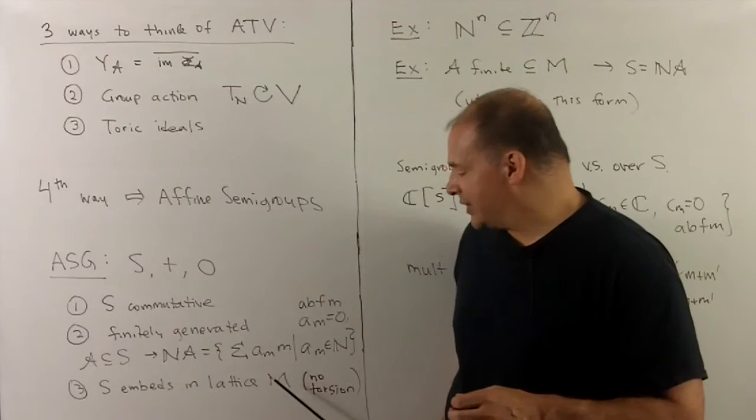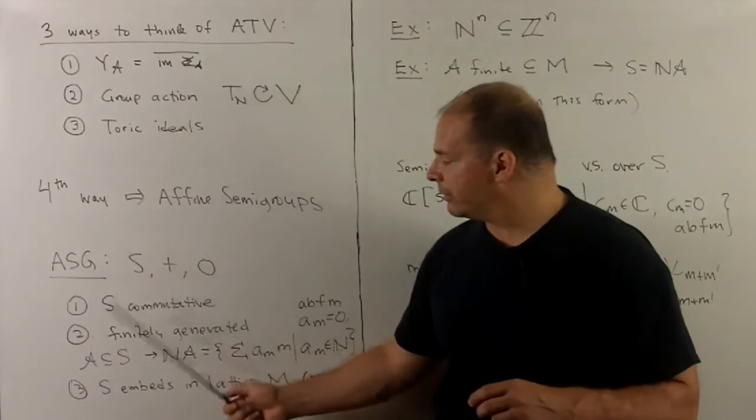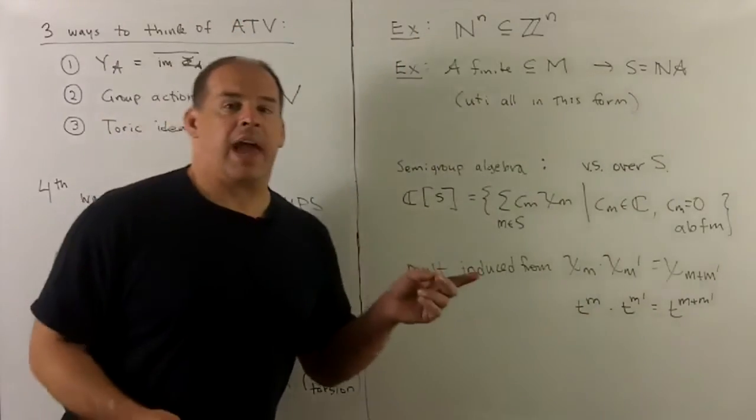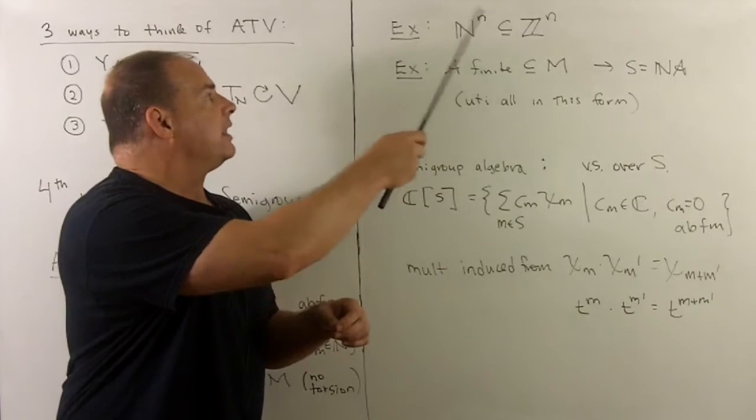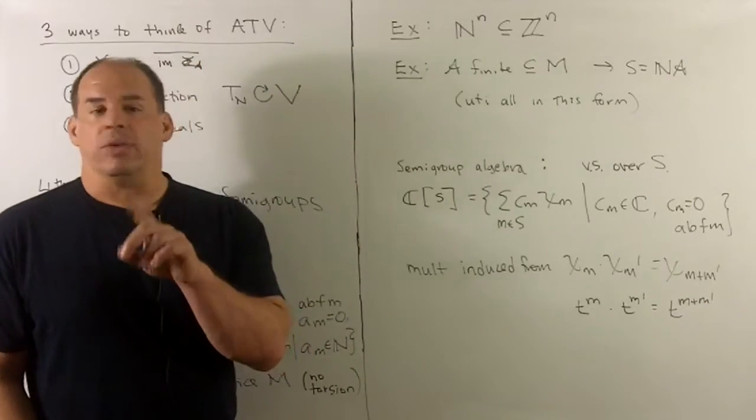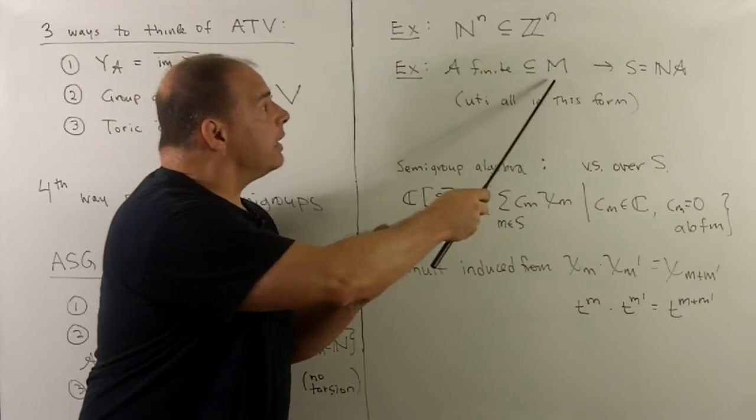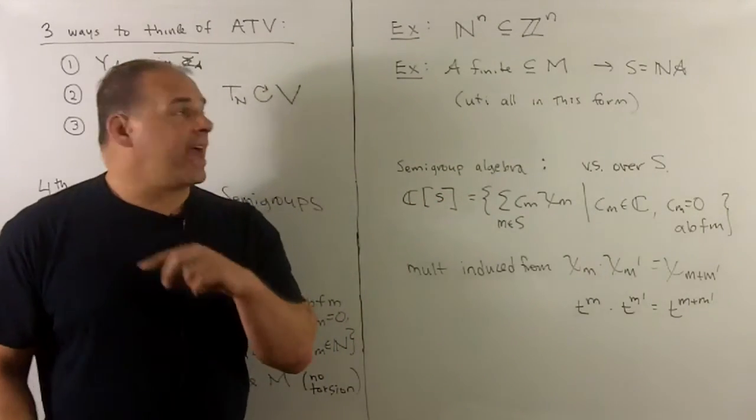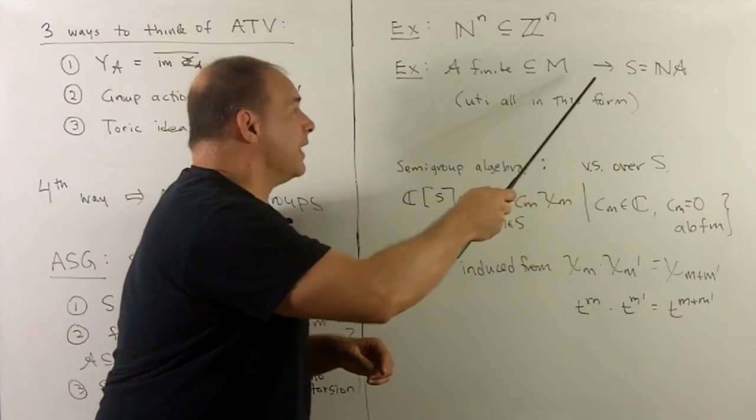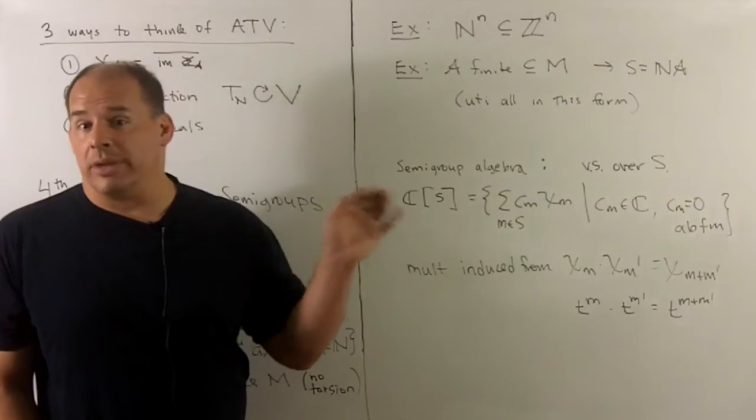Finally, we want S to embed into a lattice M, so here what we want is that there's no torsion for our operation. Now examples: we could take N to the N, natural numbers to the N inside of Z^N. So that's definitely an affine semigroup. If we take A finite subset inside of a lattice M, I take the span of A under the natural numbers, we'll call that S, then that's going to be an affine semigroup. And it turns out that up to isomorphism, all affine semigroups are in this form.